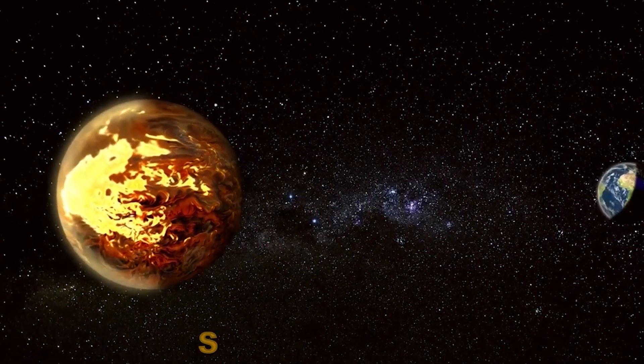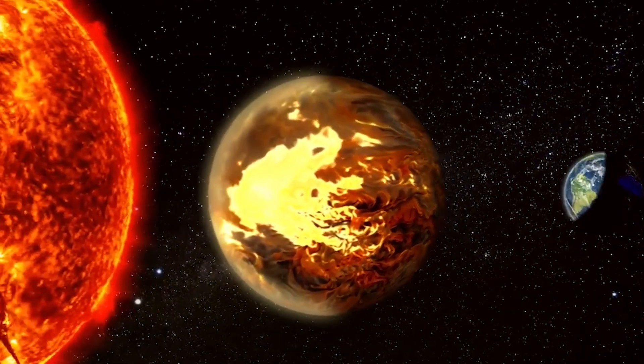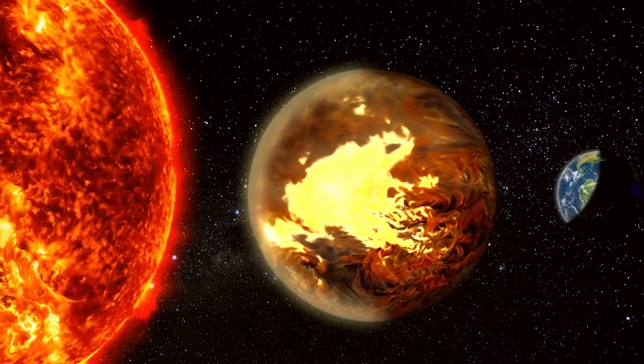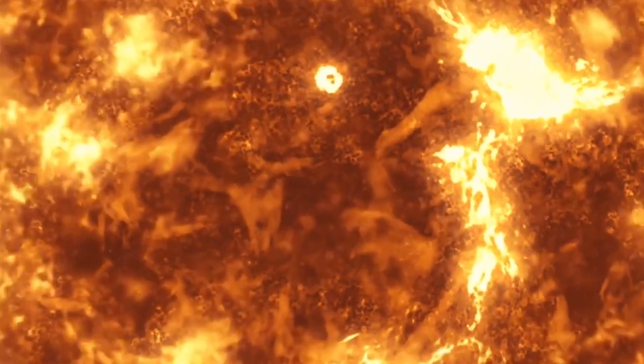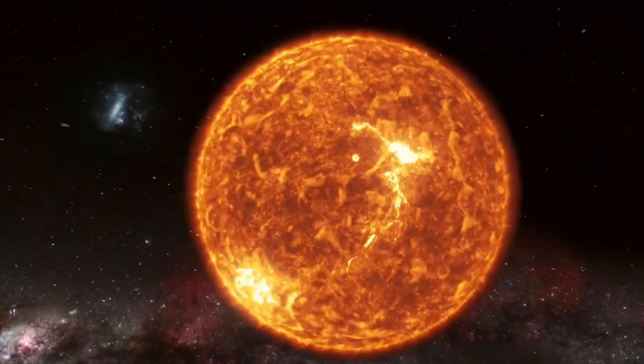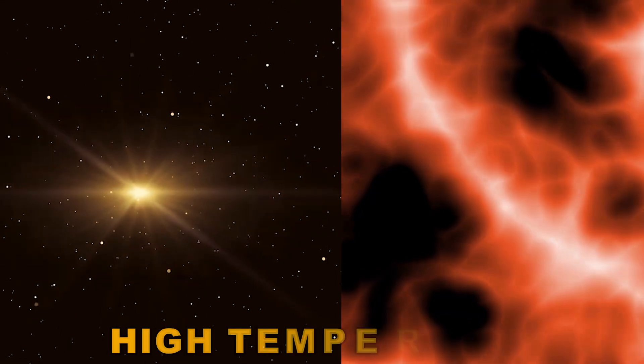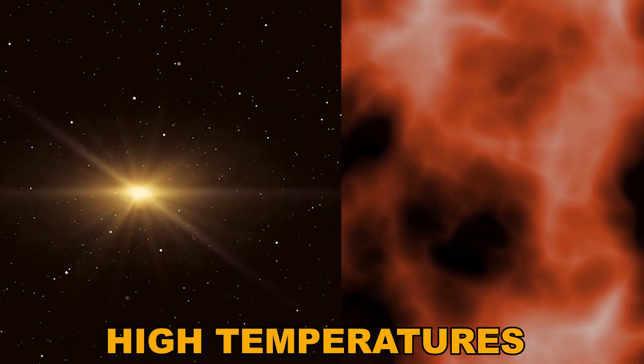We can tell if something is a star or a planet by considering the object's mass or the amount of stuff it has. Stars have a lot of mass, which gives them strong gravity that squeezes them tightly. Squeezing creates high temperatures inside them, causing them to shine brightly.